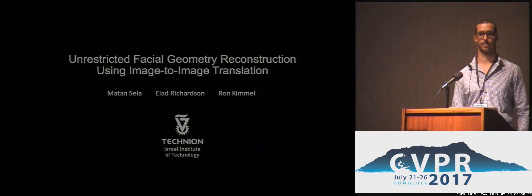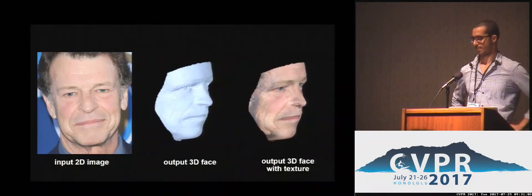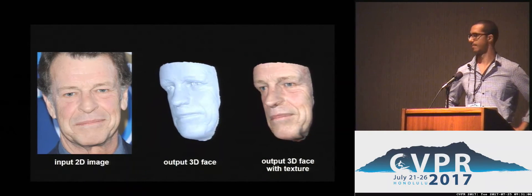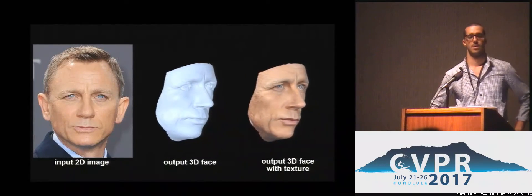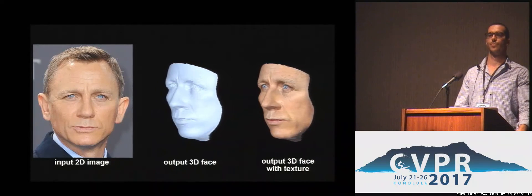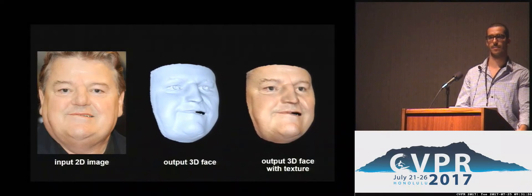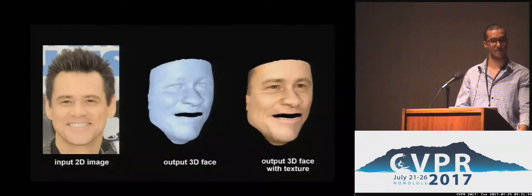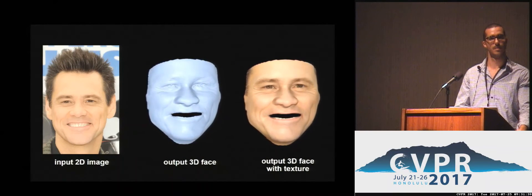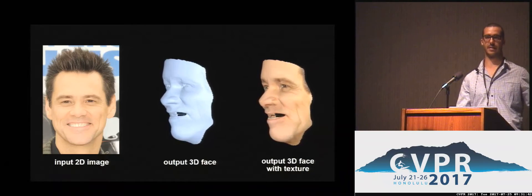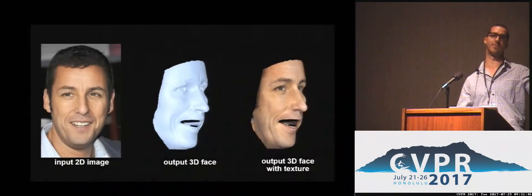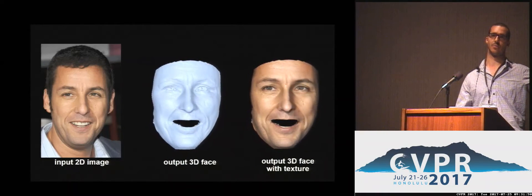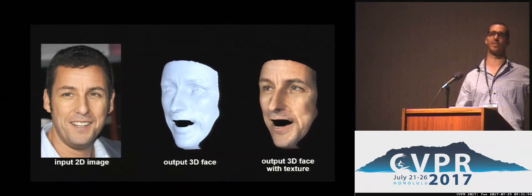Thanks to the speaker. A question from the audience: in your rendering layer, how are you dealing with hidden surfaces — do you have a Z buffer? Yes, we compute the closest triangle for each pixel, so we essentially have a Z buffer. We also assumed a fixed triangulation, so it is not differentiable with respect to the triangulation — the topology is fixed.